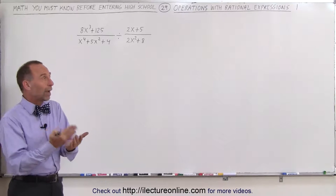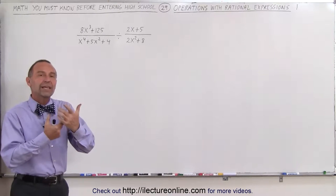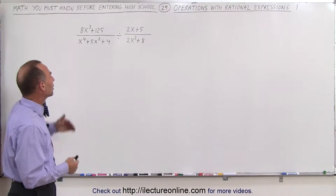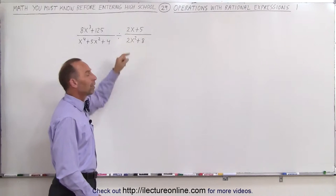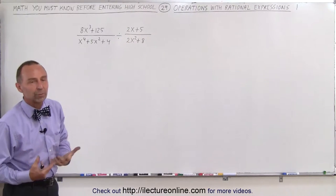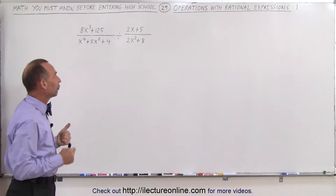First of all, we have to understand what a rational expression is. A rational expression is expressions in fraction format. So here you can see a binomial divided by a trinomial, a binomial divided by a binomial. These are what we call rational expressions, simply polynomials that are in fraction format.